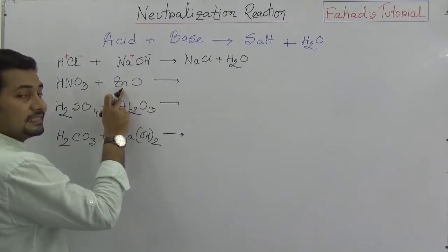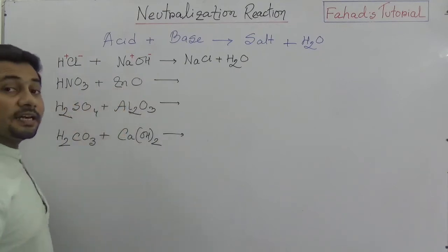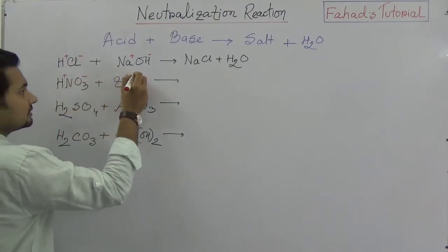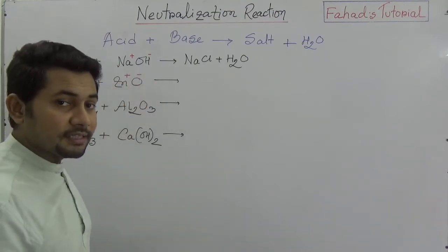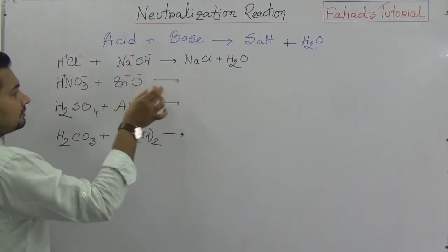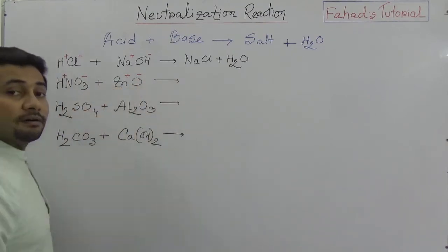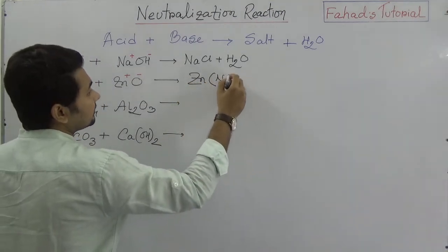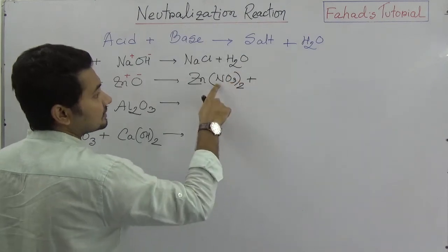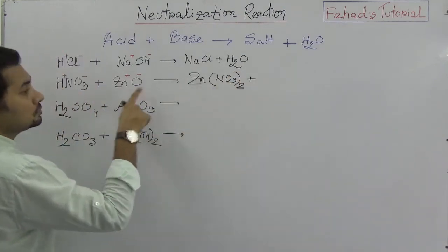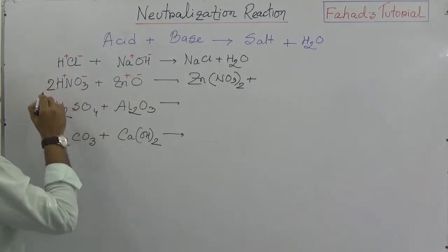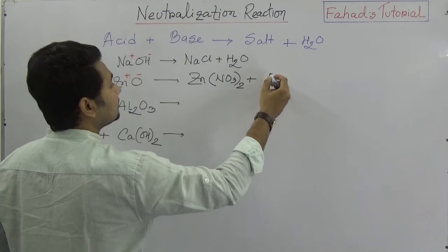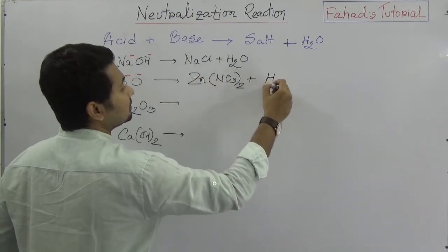This is zinc oxide. This is nitric acid. Nitric acid will dissolve H+ and nitrate, zinc and oxide. In this chemical reaction, zinc will react with nitrate that will produce zinc nitrate. You see this is nitrate, so two molecules of nitrate are there. So here it should be 2. Zinc nitrate plus H2O, which is water.